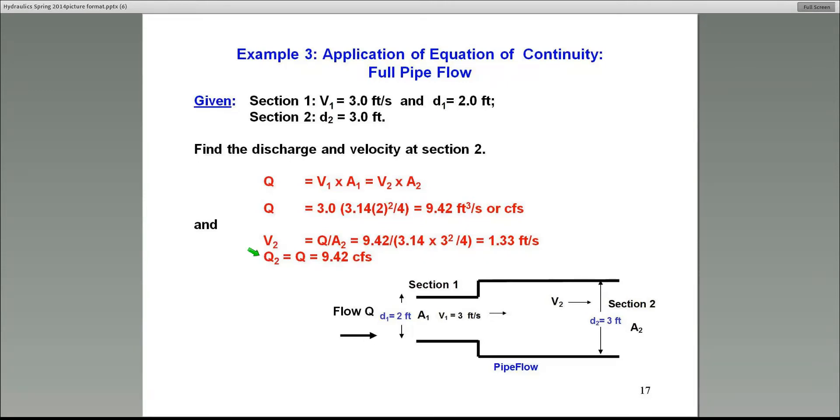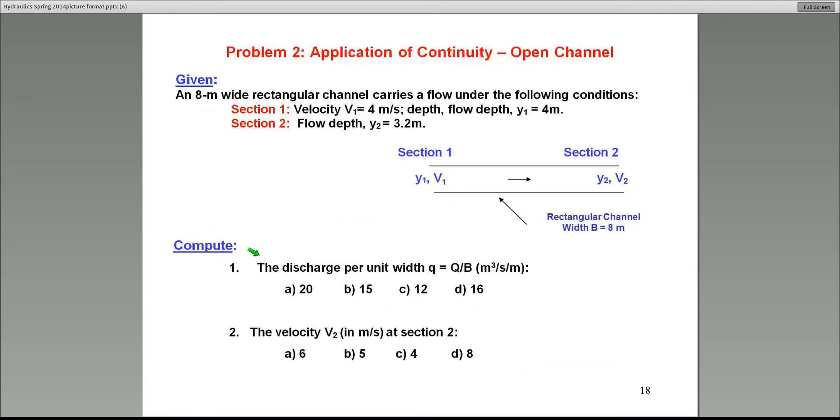Once again, just to check, my Q is constant. I just recalculate Q2, which is V2 times A2. And notice that in this case, it's also equal to 9.42 CFS. So that's the equation of continuity and pipe flow situation.